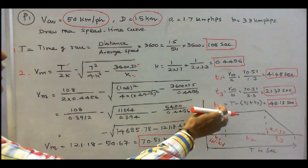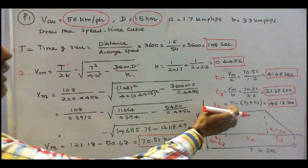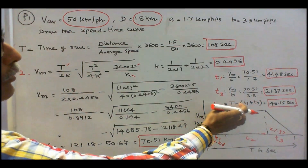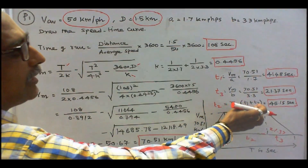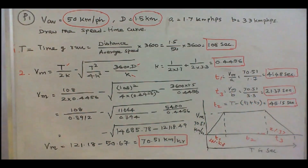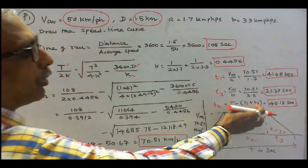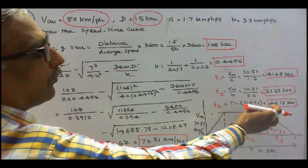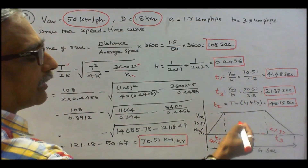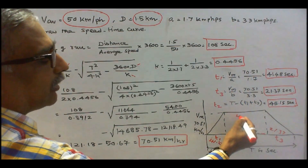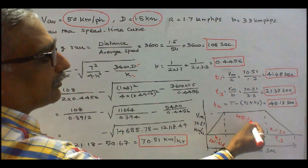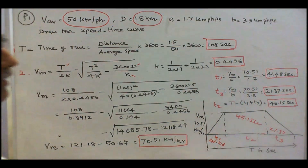Once we know t1 and t3, we can find the free running period t2. t2 equals T minus (t1 plus t3), that is 108 minus (41.48 plus 21.37), which equals 45.15 seconds. This completes the speed-time curve with all three periods determined.